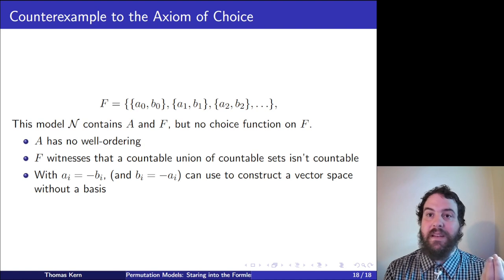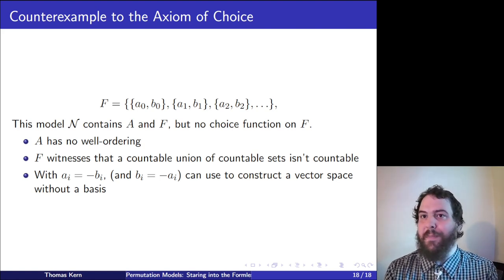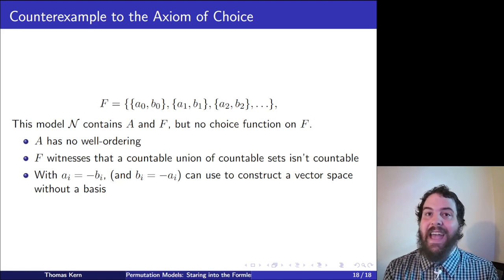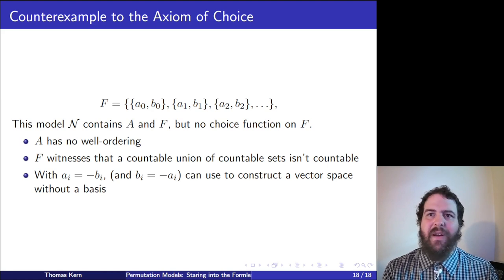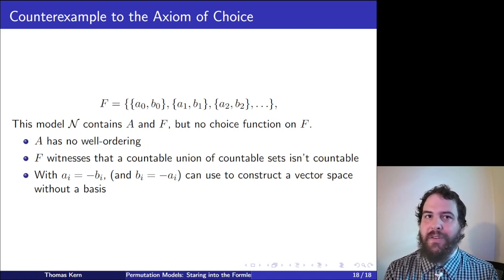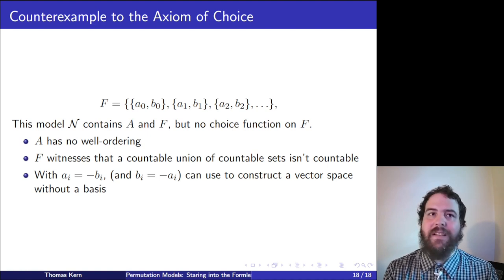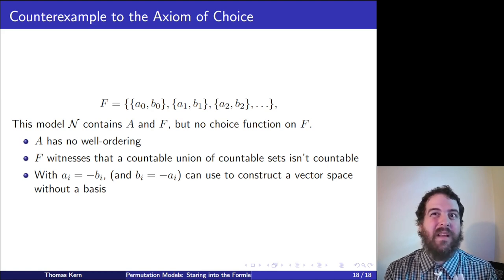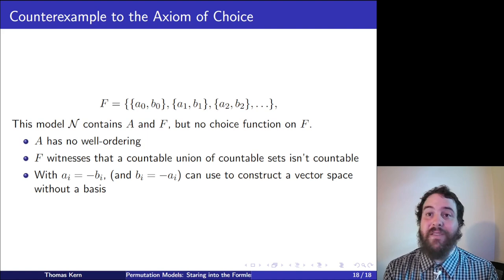F is countable — we can count its pairs. Each pair is finite (two elements), so also countable. But its union is A, which has no well-ordering and is not bijective with omega, hence not countable. This witnesses that a countable union of countable sets need not be countable without choice. If we also add AI = −BI and BI = −AI so we don't favor AIs over BIs infinitely often, we can construct a vector space without a basis.